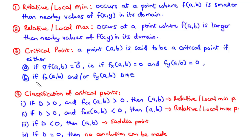The second condition is that if fx of AB and/or fy of AB do not exist, then the point AB is a critical point. Notice that the reverse is not true — a critical point can either be a relative minimum point, a relative maximum point, or neither of the two. So not all critical points are relative minimum or maximum points.